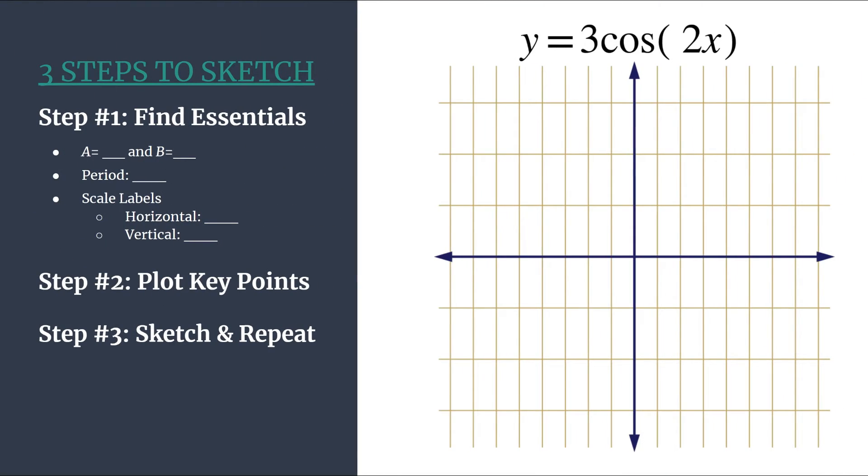We have our outline of our method on the left and then our grid on the right. So our three steps are: one, find the essentials.